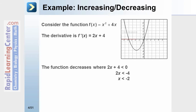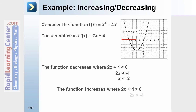You can see on the graph that it's going to decrease any time x is less than −2. The function is going to increase whenever 2x + 4 is greater than 0. Solving this inequality gives us x is greater than −2, and again looking at the graph we can see that it increases anywhere that x is greater than −2.